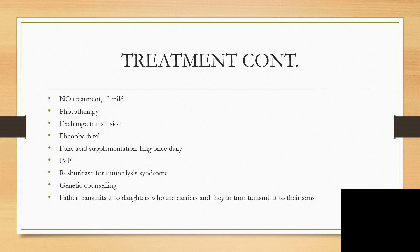Since this is X-linked, genetic counseling is important. A father will transmit it to his daughters, who will be carriers but will not exhibit the disease. They in turn will transmit it to their sons, who will be affected. However, if a female inherits homozygous alleles, she will also be affected.